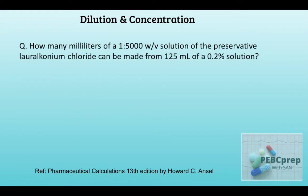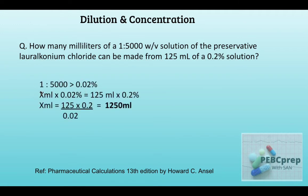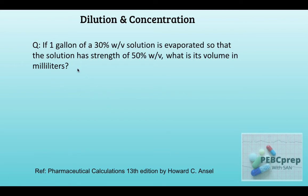Next sample question: how many milliliters of a 1:5000 weight-by-volume solution of the preservative benzalkonium chloride can be made from 125 milliliters of a 0.2 percent solution? We convert 1:5000 to percentage — that is 0.02 percent. Then applying C1V1 = C2V2 with 0.02 percent and X mL on one side, and 125 mL of 0.2 percent on the other, we get 1250 milliliters.